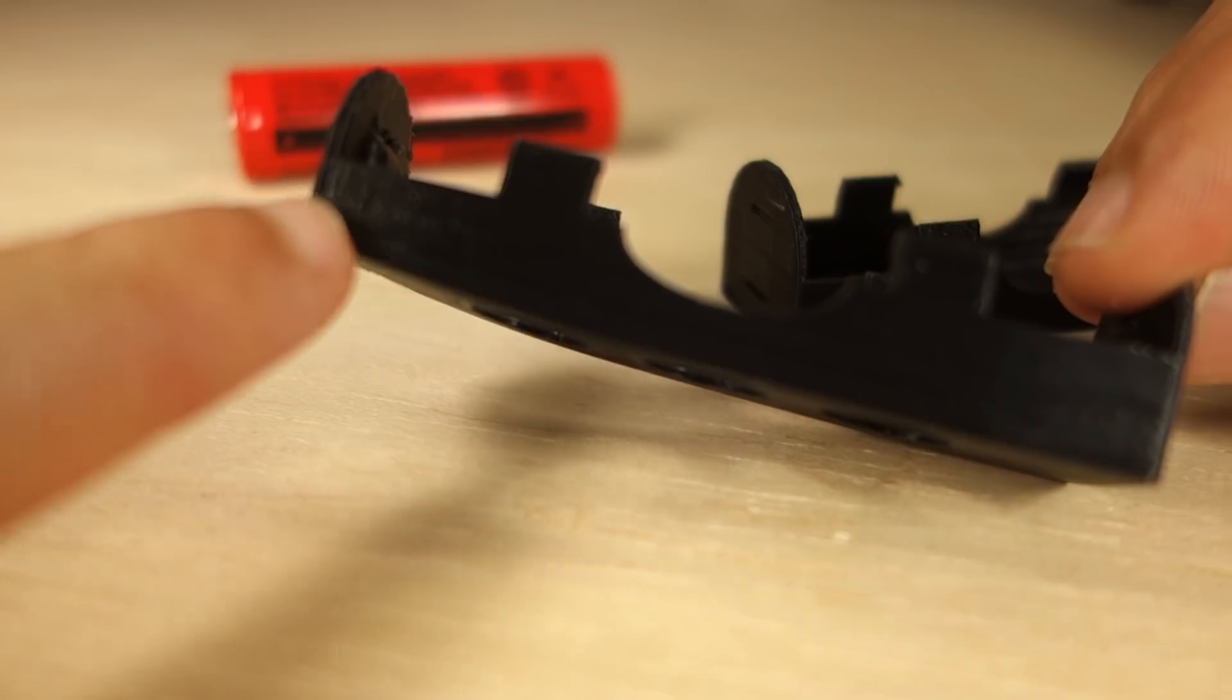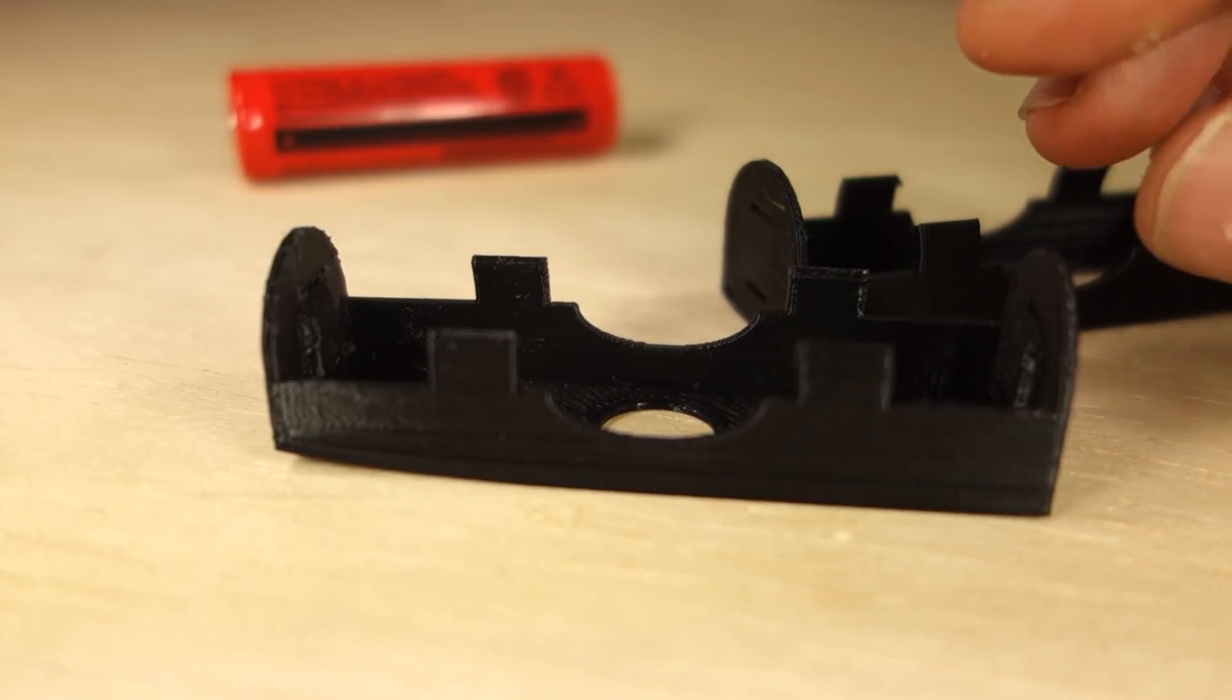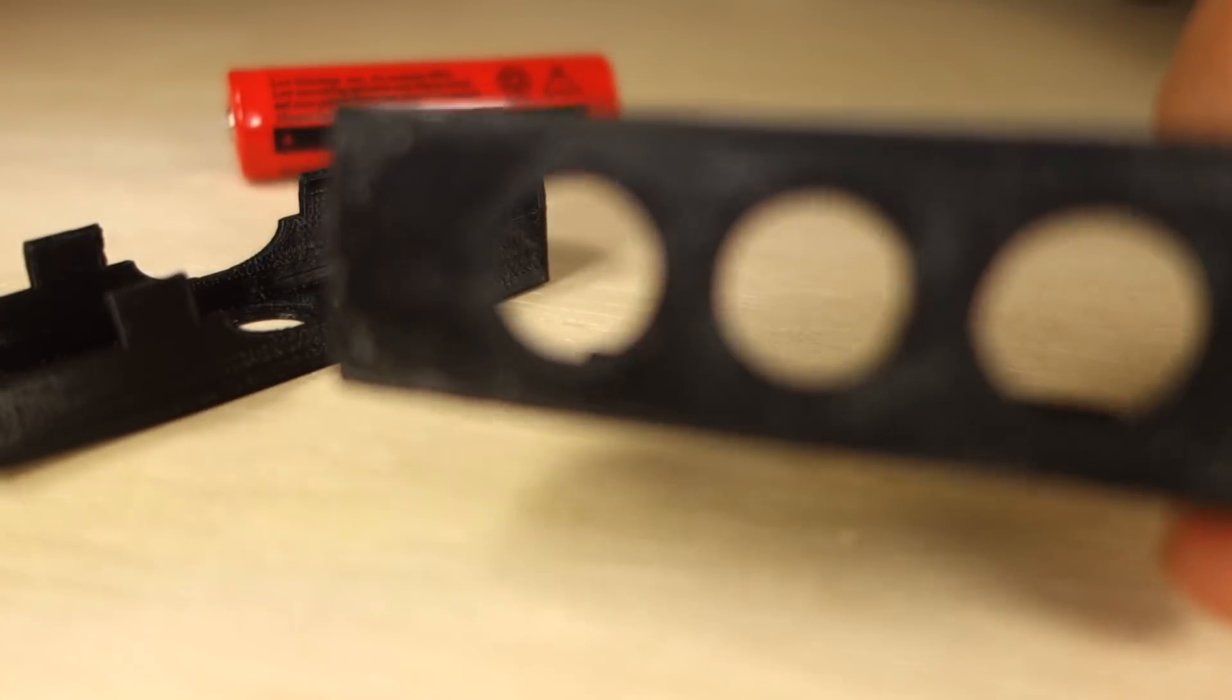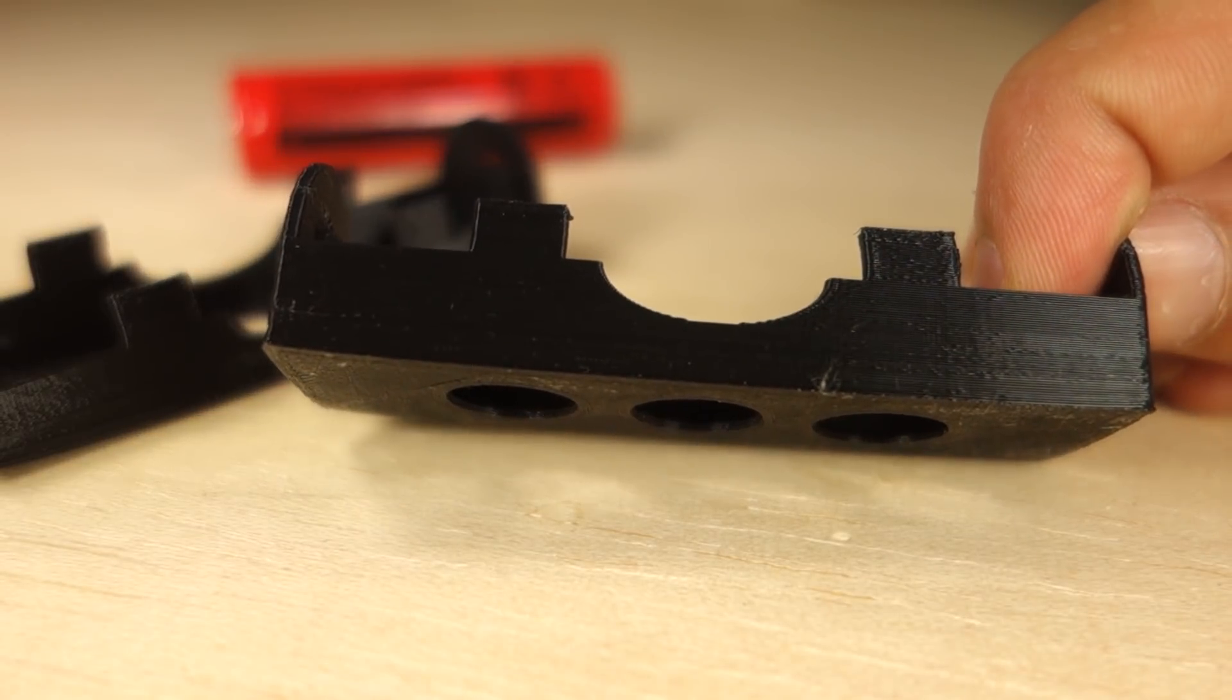This is the result when nothing was added to the build plate. You can clearly see the warping effect. And this is the result using painters tape and glue on the bed. You can no longer see the warping effect.